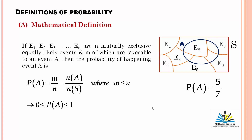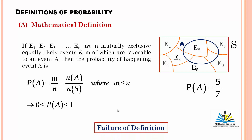Now we have the failure of this definition. When we have an infinite number of trials, n(S) would contain an infinite number of elements. You might think the probability must go toward zero, but in that case we will still have some probability — not zero. So this is the failure of the definition: the Mathematical Definition does not work when the number of elements in the sample space becomes infinite.